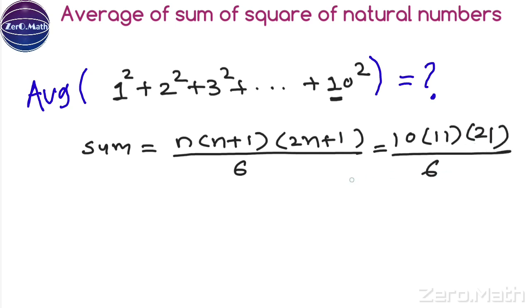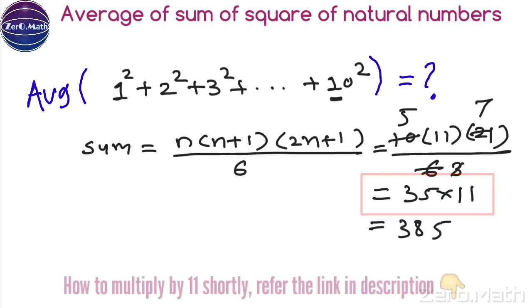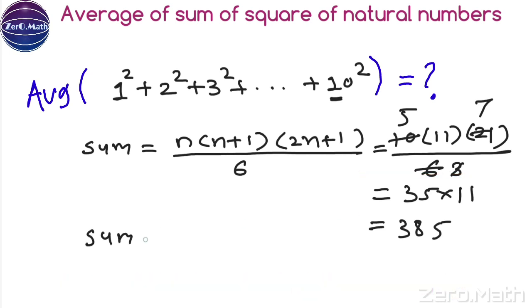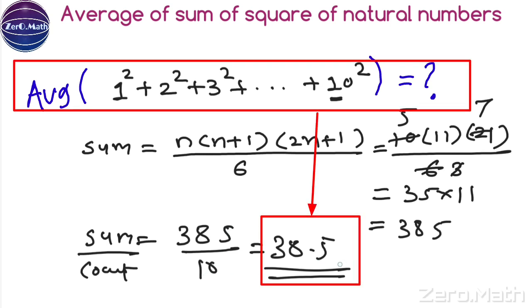Simplifying: 6 divides into 2 and 3; 2 × 5 = 10 and 3 × 7 = 21, so we get 5 × 11 × 7 = 35 × 11. To multiply 35 by 11: write 3 and 5, and place their sum (8) in between, giving 385. The sum of squares is 385. Divided by the count of numbers (10), the answer is 385 / 10 = 38.5, which is the average of the squares of the first 10 natural numbers.